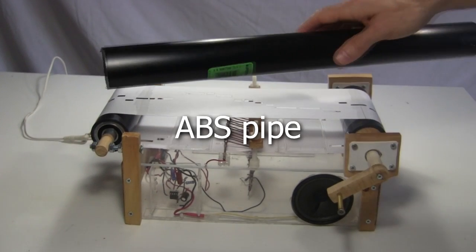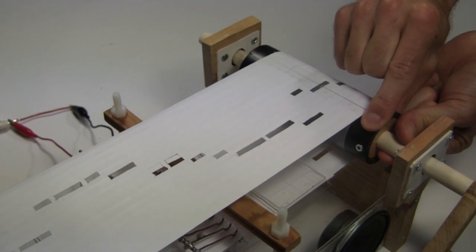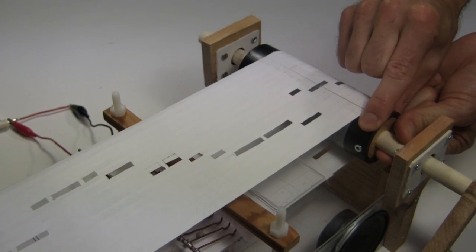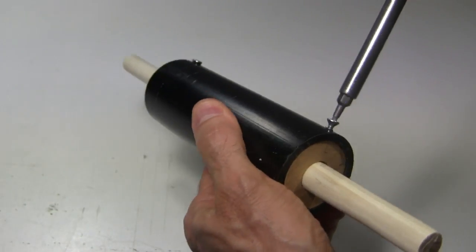The rollers are simply ABS pipe, a type of plastic. For the roller on this side, I needed the ABS to be firmly attached to the wooden dowel shaft. So I cut two wooden discs with a hole in the middle, and used screws to hold it all together firmly.